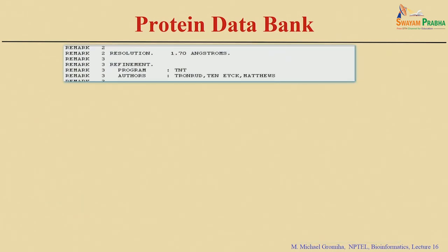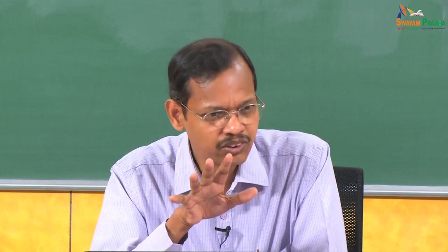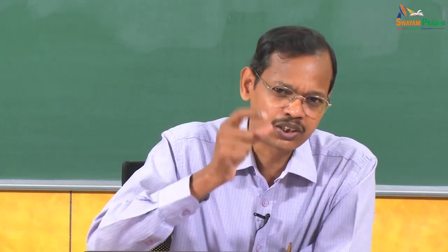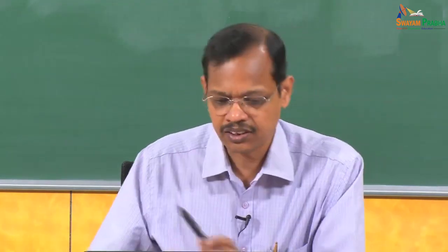Going down the page, you can see the resolution — for this structure it is 1.7 Angstrom. The meaning of resolution is the accuracy with which you can determine the position of each atom. Earlier, structures had lower resolution, like 3 or 5 Angstrom, where electron density maps were not so clear. With more sophisticated instruments, you can now get resolutions up to 1 Angstrom, giving very reliable atomic coordinates.